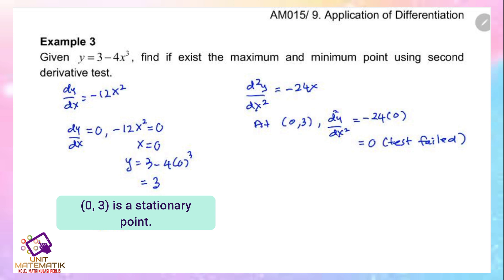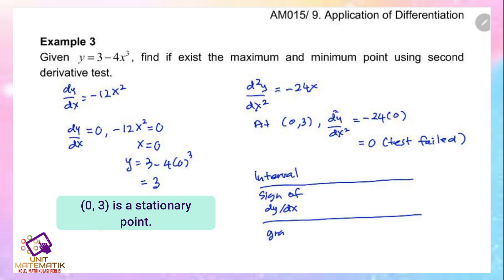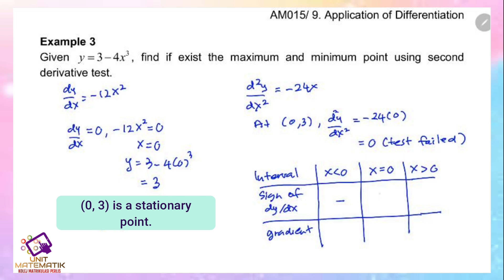To use the first order derivative test, we form a table that includes the interval, the sign of dy/dx, and the gradient. Using the intervals x less than 0, x equals 0, and x greater than 0: for x less than 0, the sign of dy/dx is negative; for x equals 0, the value is 0; for x greater than 0, the sign of dy/dx is negative. So the gradient is decreasing on both sides, and the conclusion is that the function has no extremum.